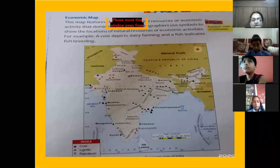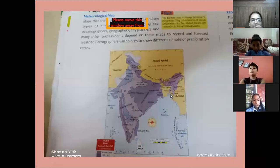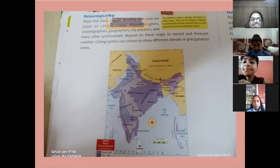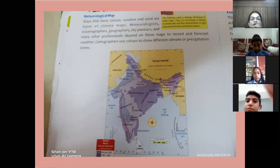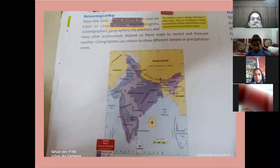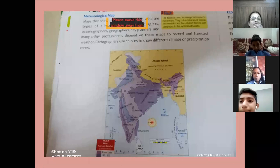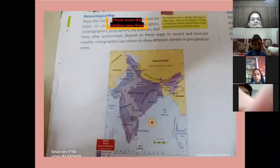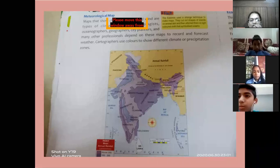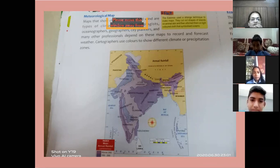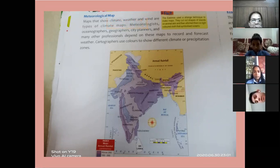Now, the meteorological map. Meteorological maps are used to show the weather and climatic conditions of a place. These maps show climate, weather conditions, and wind. Meteorologists, oceanographers, geographers, city planners, and many other professionals depend on these maps to record and forecast the weather of a particular place. Cartographers use colors to show different climate or precipitation zones.